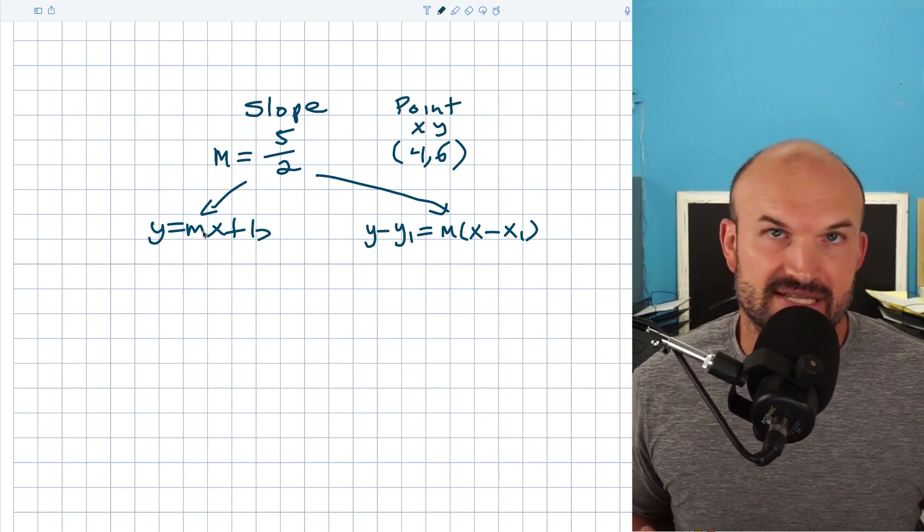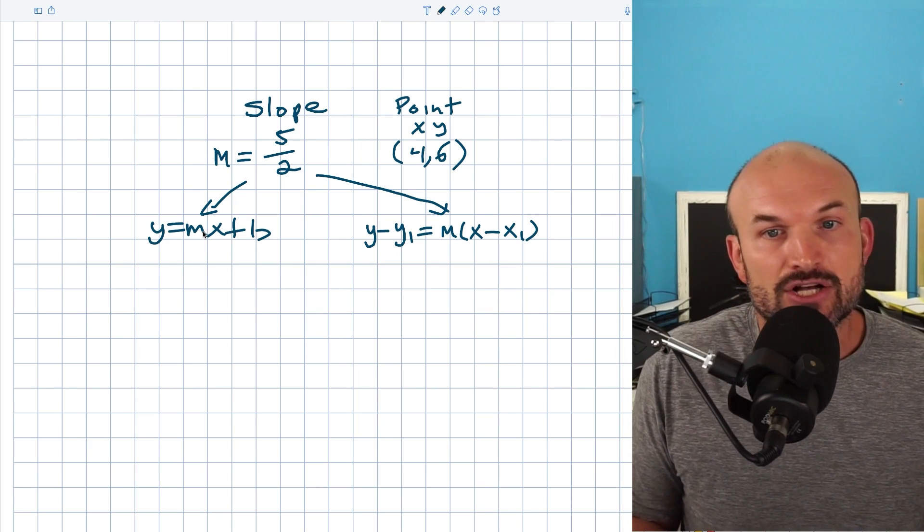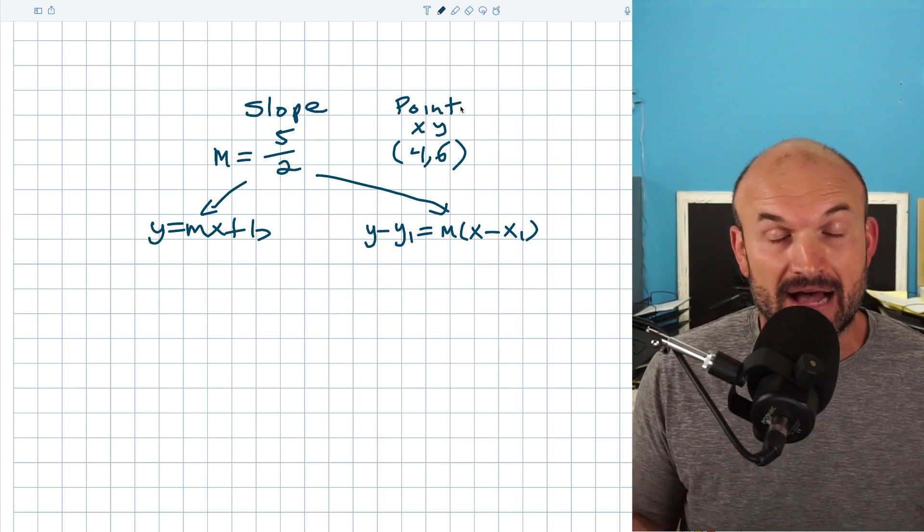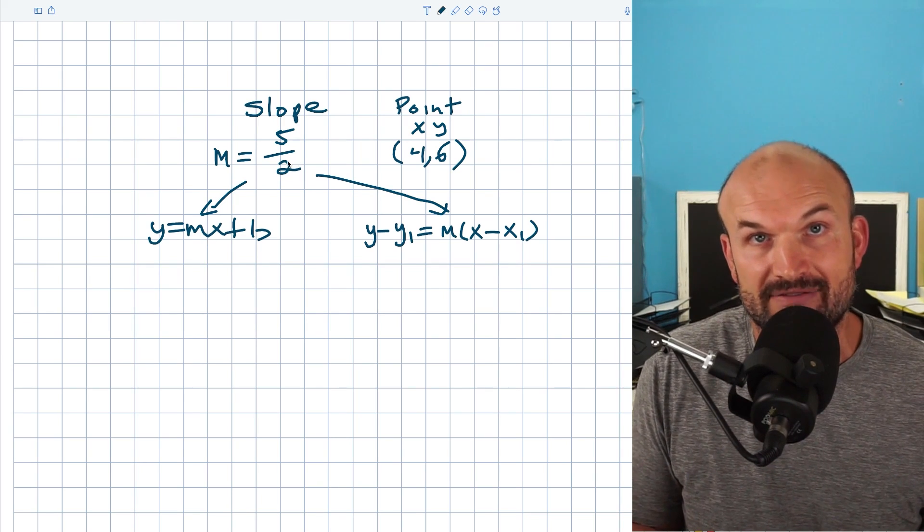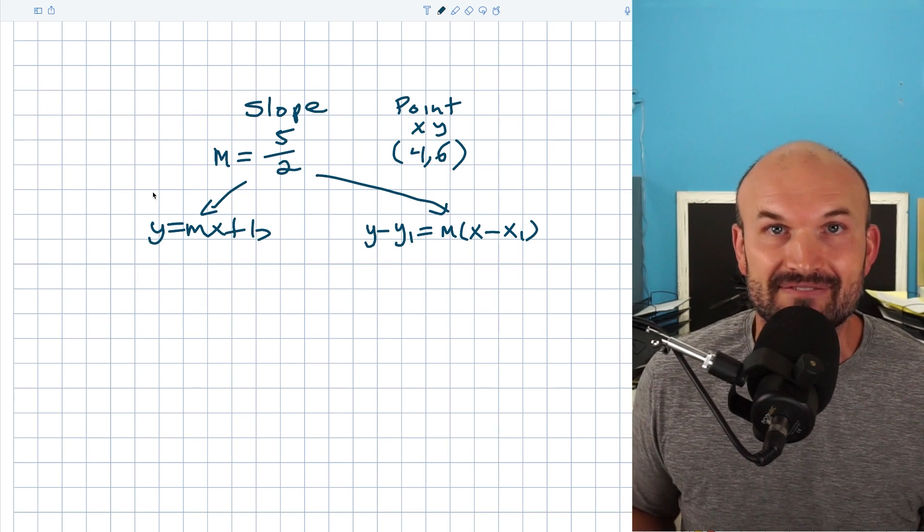M represents the slope. B represents the y-intercept. We do not know what b is. That is what we actually need to find. So what we're going to do is plug in x and y, which represents one point on this line. And we're going to plug in five halves in for the slope. When we do that, the only missing variable we're going to have left is going to be b.